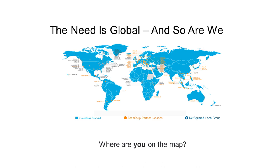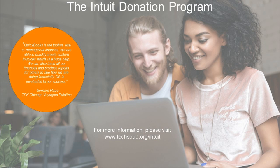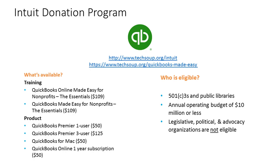So just a little bit about TechSoup. We are in 236 countries and territories. We partner with several technology companies such as Adobe, Intuit, Microsoft, Symantec, and QuickBooks Made Easy. We have a lot more information about the donation program on TechSoup.org/Intuit. If you are interested in learning more about QuickBooks Online Made Easy for Nonprofits, and also QuickBooks Made Easy for Nonprofits: The Essentials, you can find that at TechSoup.org/QuickBooks-Made-Easy. Greg will go into greater detail about what that is.